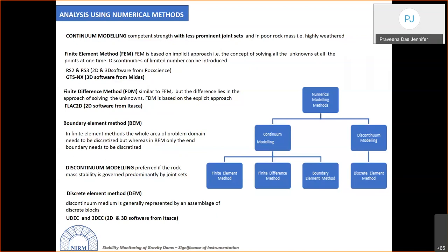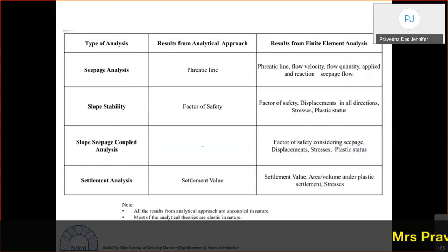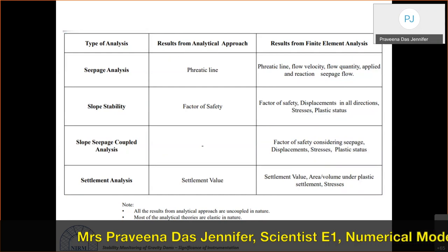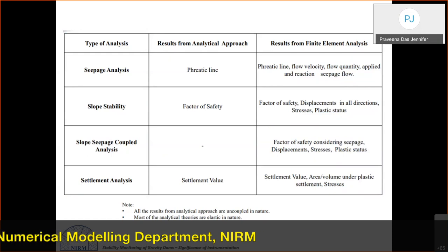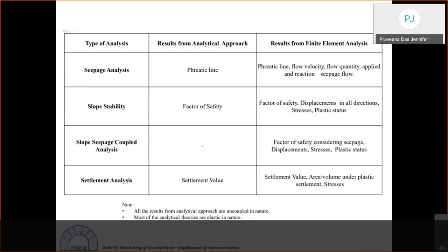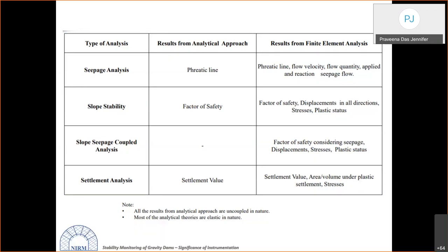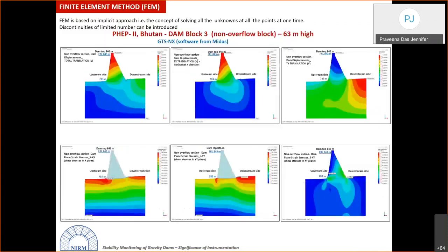FEM uses an implicit approach, solving all unknowns simultaneously and allowing unlimited discontinuities. FDM uses an explicit approach. Discontinuum modeling is preferred when rock mass is governed by joint sets. Outputs from these models include seepage analysis, slope stability, coupled slope-seepage analysis, and settlement analysis — providing displacements, stresses, plastic states, and volume of settled areas.